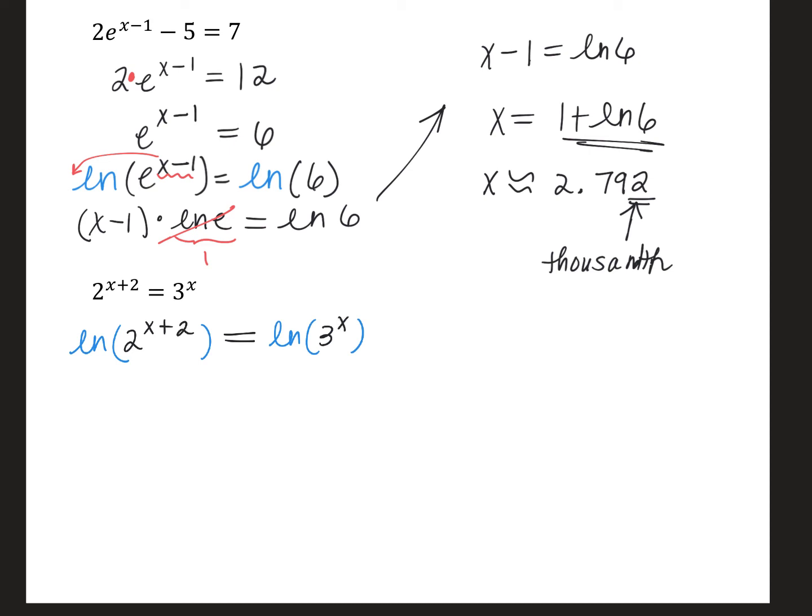Now again, we're going to use the log roll property, which tells us that if there's an exponent inside of a logarithm, that can roll down, that can become the coefficient. So I have X plus two natural log of two times X natural log of three. Algebra note here, why am I putting the X plus two in parentheses? Yet I didn't do so there. You might notice when I rolled the X minus one up here, I also put this in parentheses.